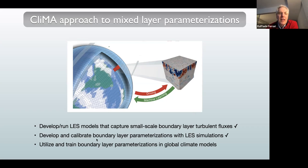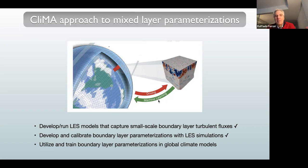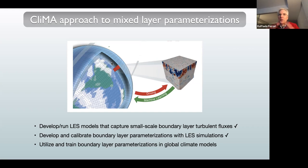The real problem in representing this small-scale physics is just lack of resolution. But if we have enough resolution, these models are quite credible. So we can create data for what the turbulence looks like at various points of the large-scale model. The first step is to run high-resolution simulations and create a library to use as training data to learn about the parameterization. Then we develop and calibrate a boundary layer parameterization based on these high-resolution simulations, and eventually put it back in the large-scale climate model to run global ocean solutions.